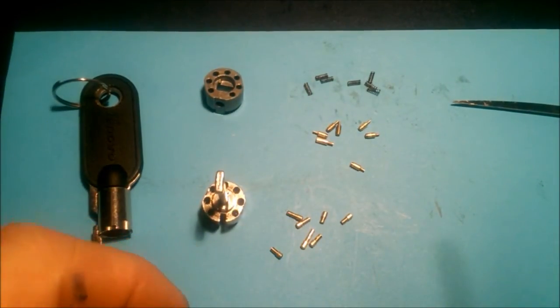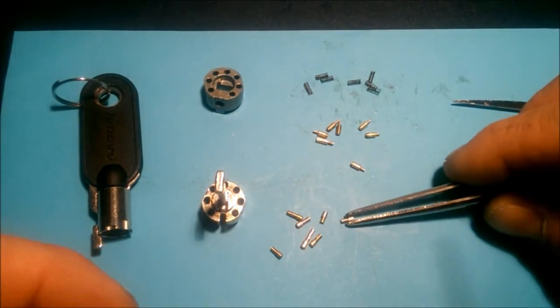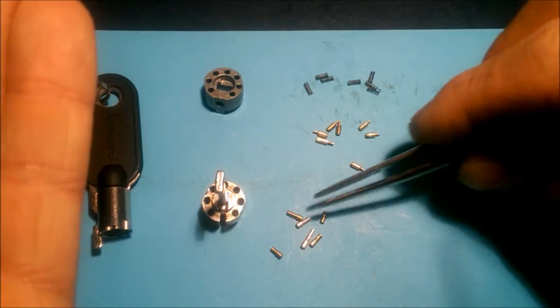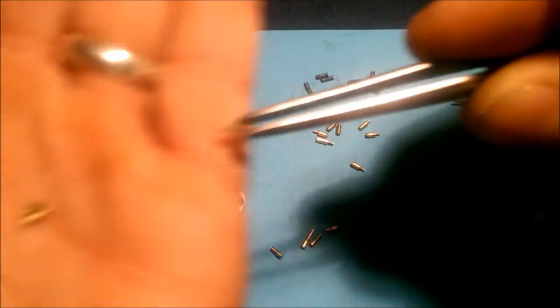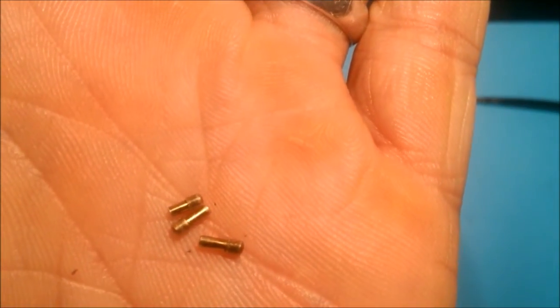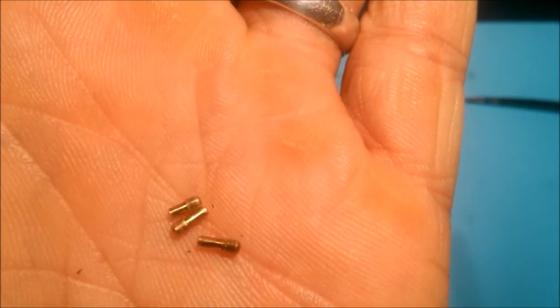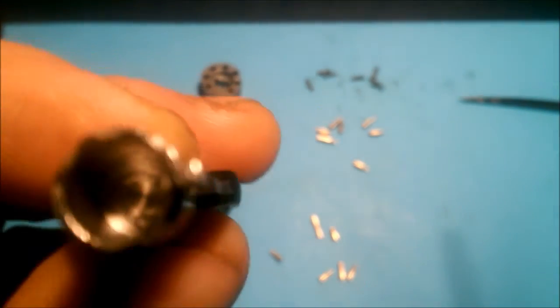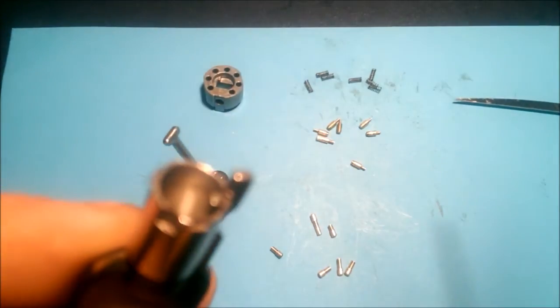Then we have the key pins. These are the key pins. They have different length, of course. I can give you a closer look to that. These are the key pins, and of course the different length matches the different cutouts on the key.